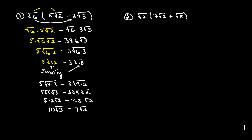On this next one, we'll distribute that square root of 2 in. So the square root of 2 times 7 square root of 2 is 7 times the square root of 2 times the square root of 2. We've got the addition sign in between, so we'll do plus. And now we've got 2 times the square root of 5, so that'll be the square root of 2 times the square root of 5.